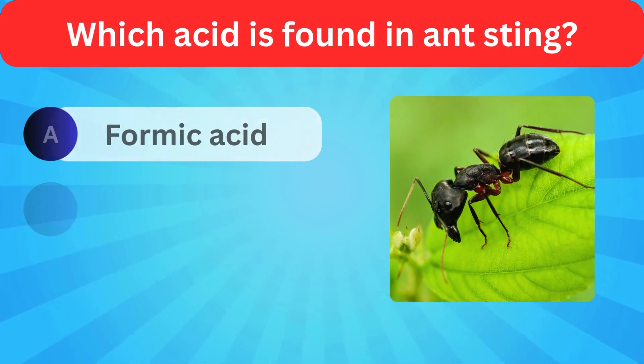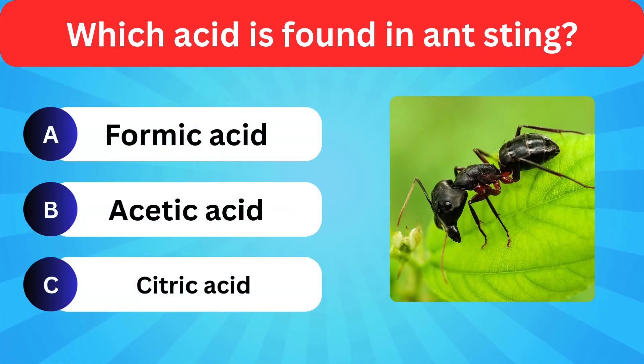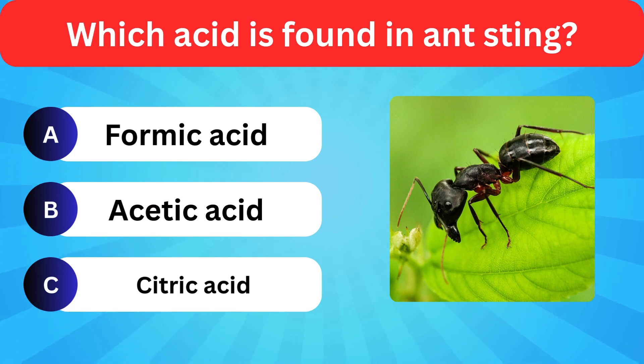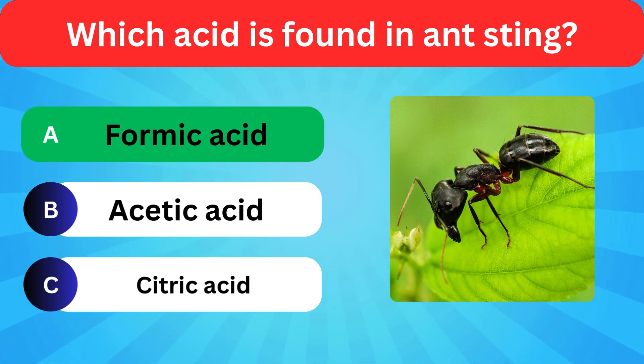Which acid is found in an ant sting? Options: Formic acid, Citric acid, Lactic acid. Correct answer is formic acid.